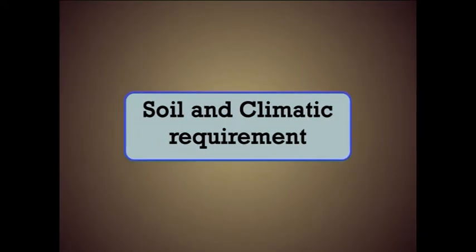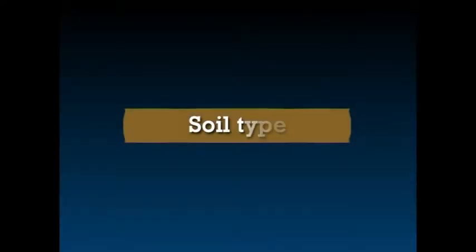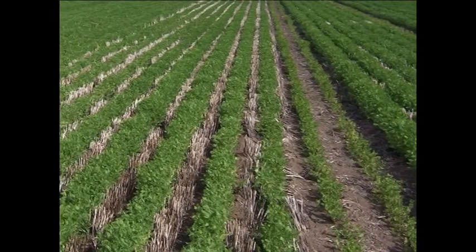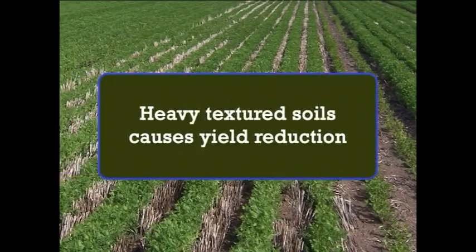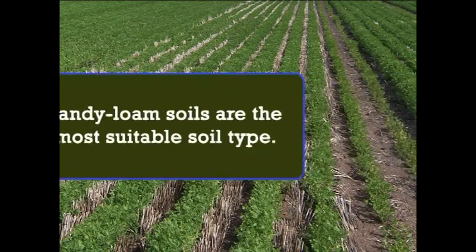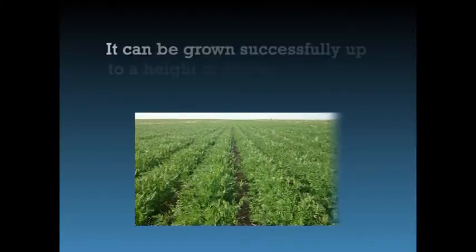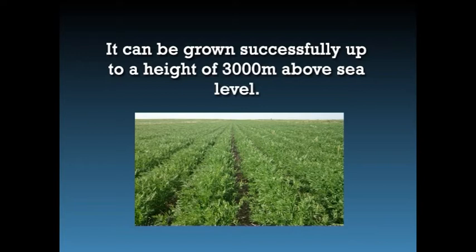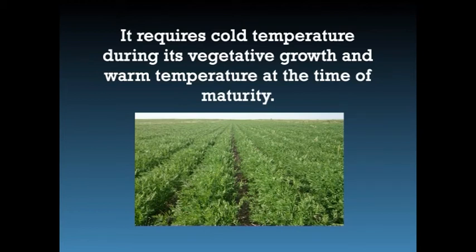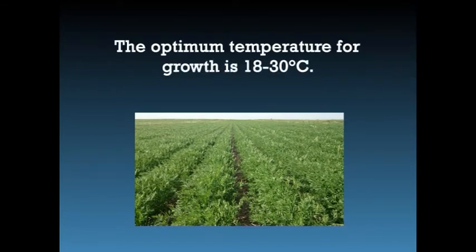Lentil is a well-adapted plant that grows in a wide range of soil types. However, heavy textured soil causes yield reduction, whereas sandy loam soils are the most suitable. It can be grown on light loams and alluvial soils of Punjab and UP, and black cotton soils of Madhya Pradesh. It is a very hardy crop and can tolerate frost and severe winter to a great extent, and can be grown successfully up to a height of 3,000 meters from sea level. It requires cold temperature during vegetative growth and warm temperature at maturity. The optimum temperature for growth is 18 to 30 degrees centigrade.